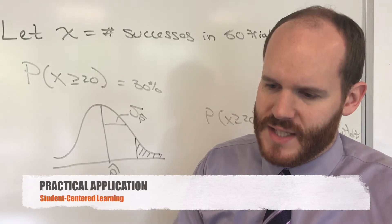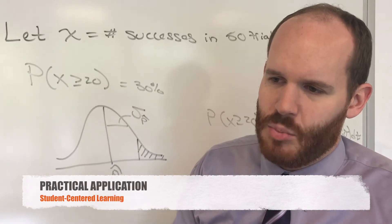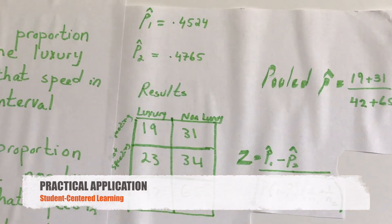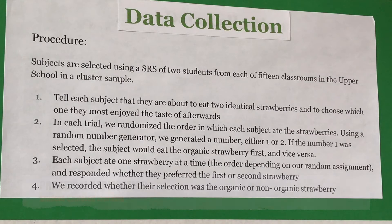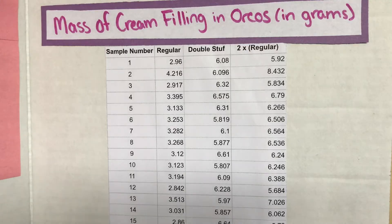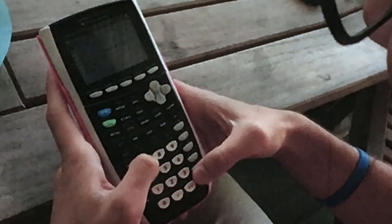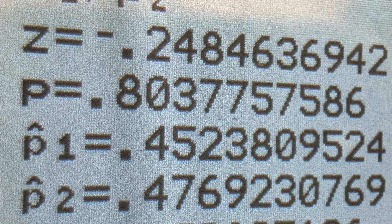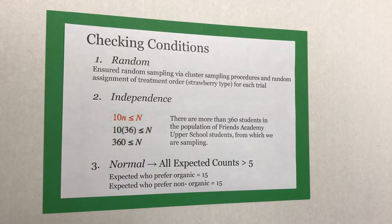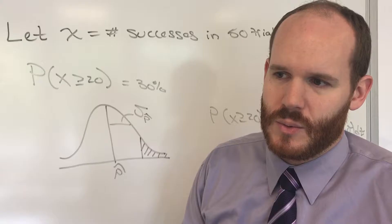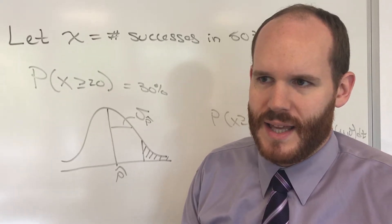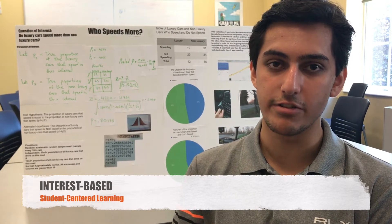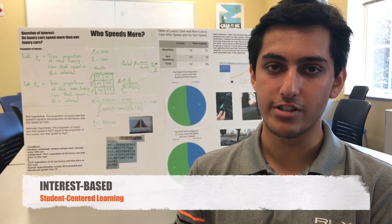They have to work with a partner, they have to design a study, it has to be mathematically valid and meet all the requirements for statistical inference. They have to collect data, organize data into graphs and charts, calculate statistics on that data, run a full statistical test, make an inference based on that information, and then be able to clearly and concisely communicate that to a room full of people. We're given the opportunity to take what we've learned in the classroom and apply that to an outside area of interest.